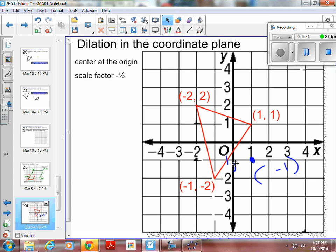Okay, and then the point (1,1) would become negative one-half, negative one-half. Multiplying 1 times negative a half gives you a negative one-half. So that point would be right in here.